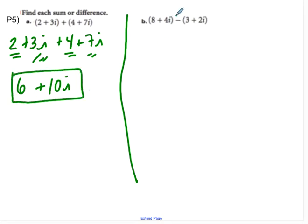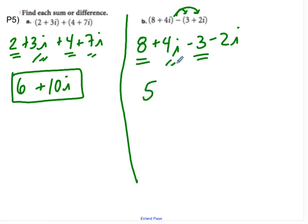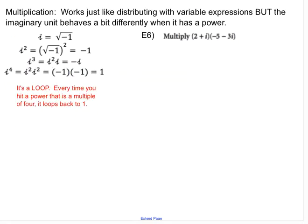If we do the same thing here, now I have to worry about distributing this negative. So I have 8 plus 4i minus 3 minus 2i. When I combine my real parts, I get 5. When I combine my imaginary parts, I get plus 2i, and that's it. Alright, so moving on.